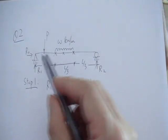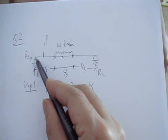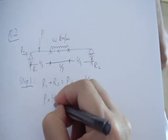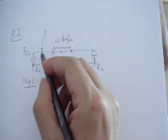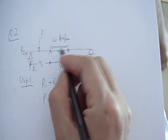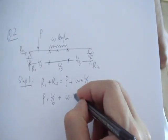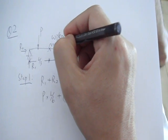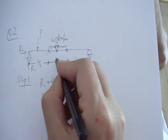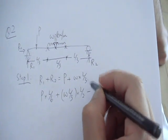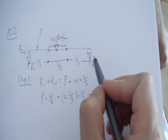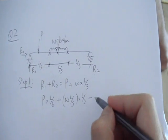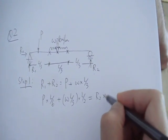Then you consider rotation about any one point. Let's pick this point and consider rotation about the left end. So P times the distance from the left end is L over 6, and that will give you a clockwise moment. Then plus this w - the total load due to this UDL is w times L over 3, and this total load is acting at the center of the beam, which is L over 2 from the left support. Those two clockwise moments will be balanced by the anticlockwise moment due to this R2.